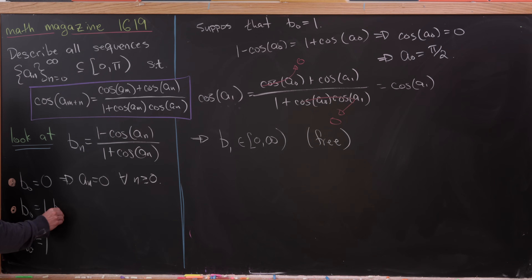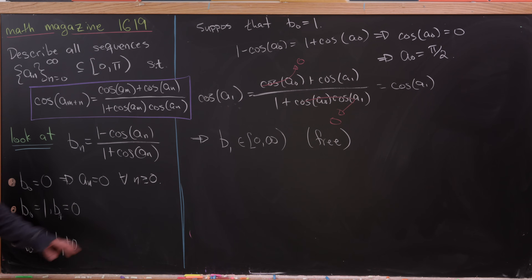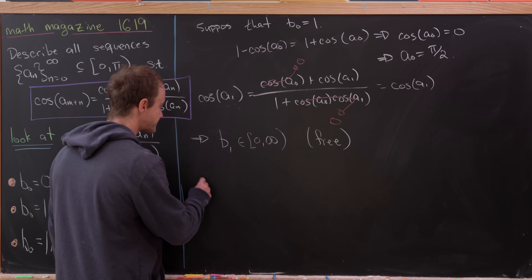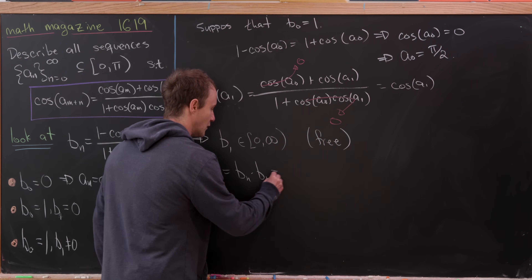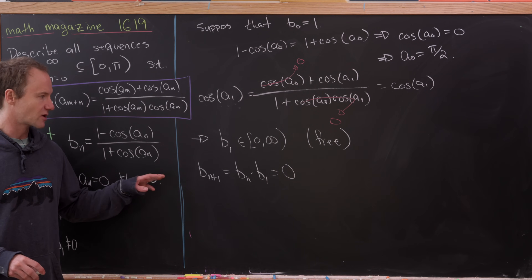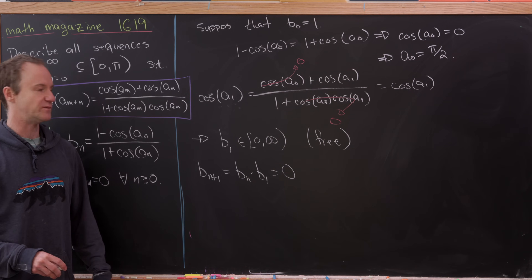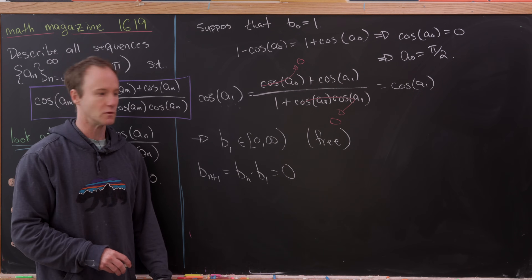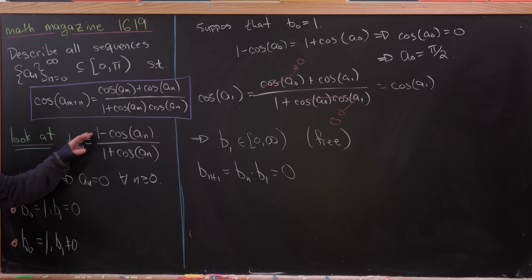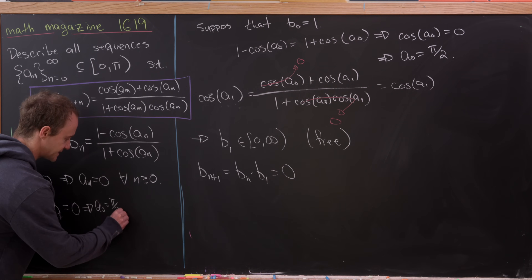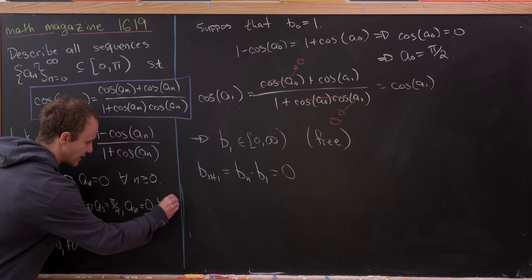In the case when b_1 = 0: b_{n+1} = b_n · b_1 = 0, and repeating this gives b_n = 0 for all n ≥ 1. That means a_n = 0 for all n ≥ 1. So this case gives us the sequence a_0 = π/2 and a_n = 0 for all n ≥ 1.